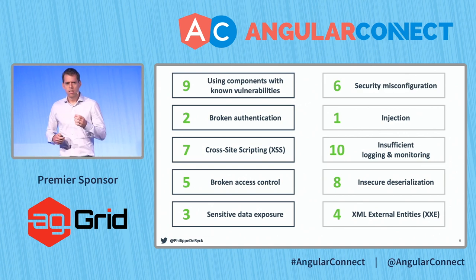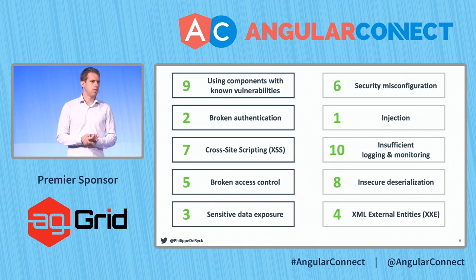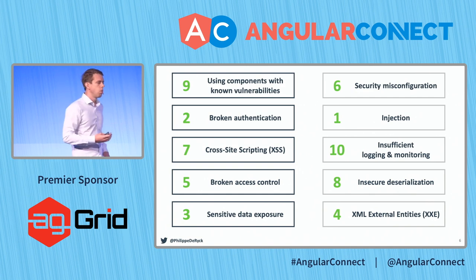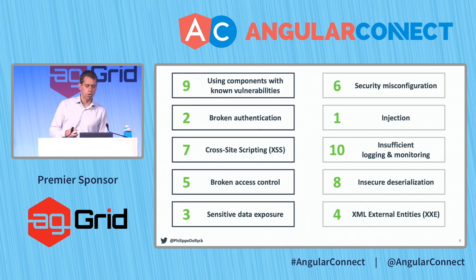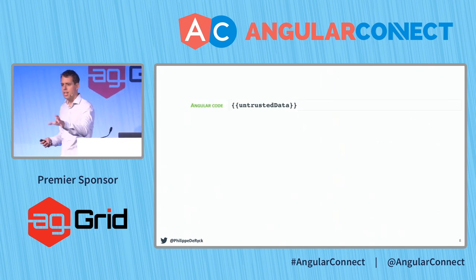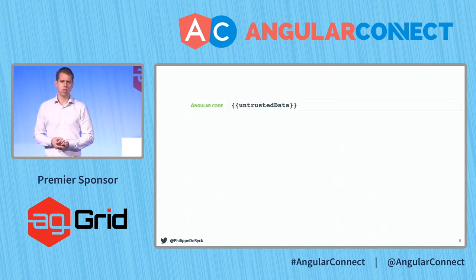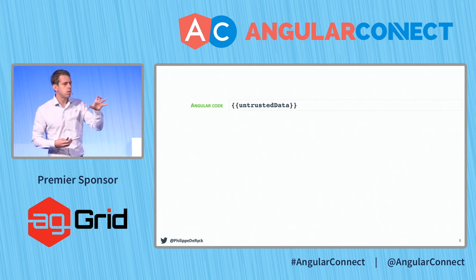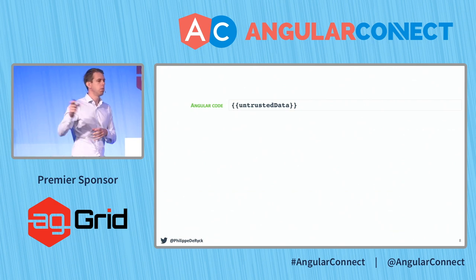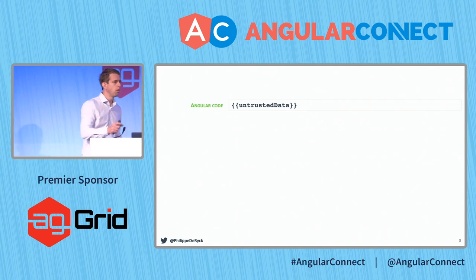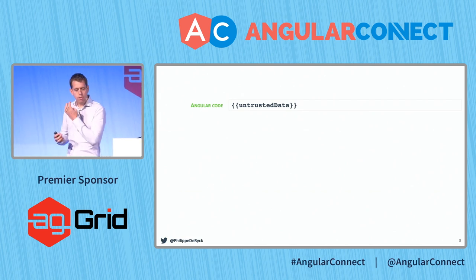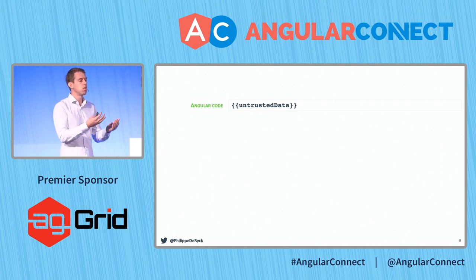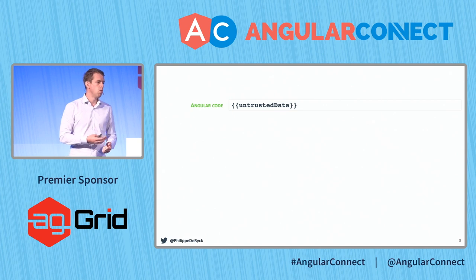Cross-site scripting is a really, really nasty problem. It's essentially an attack where the attacker succeeds in executing JavaScript code in your application. It occurs any time some untrusted data ends up in the page — there's a potential cross-site scripting vulnerability. Any time you put something into the page from the database or from the API in the backend, it's going to cause problems. And we've seen these problems everywhere. I can guarantee that almost every application will have them.